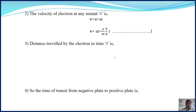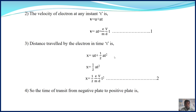Now let us calculate the distance traveled by the electron in time t. Using the second kinematical equation, X equals U plus one-half AT squared. Since the initial velocity U is 0, the equation becomes X equals one-half AT squared. Putting the value of acceleration, this gives X equals one-half times (eV upon Md) into t squared. This is equation number 2.